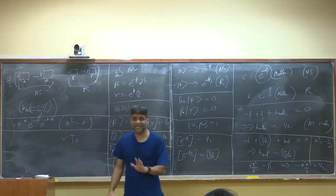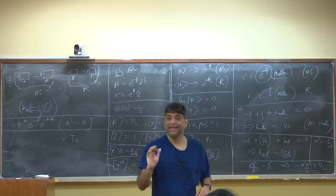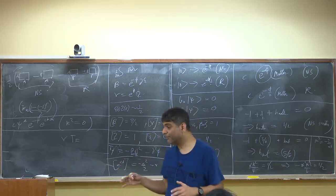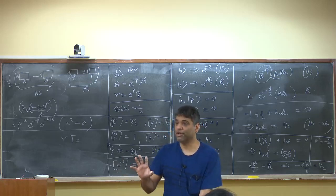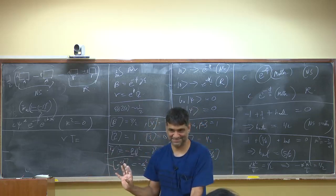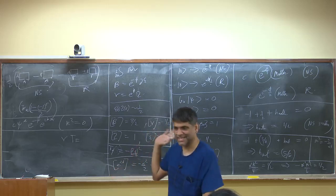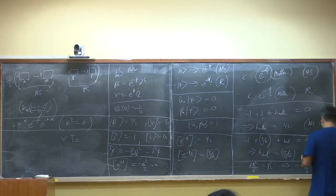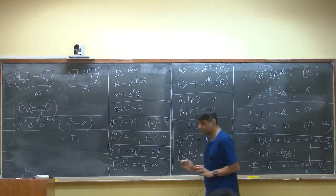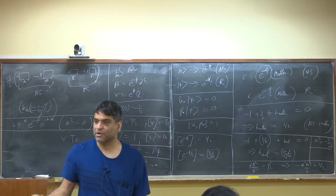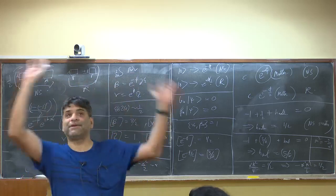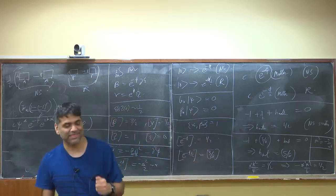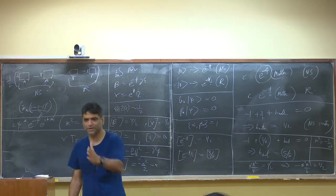The right way of thinking about this is that we're not projecting onto states of odd fermion number — we're actually projecting onto states of even fermion number, but fermion number gets a contribution not just from the matter fields but also from the ghosts. The GSO projection should be thought of as a projection onto the even fermion number sector when we include the contribution of the ghosts. Then everything is perfectly consistent, and the identity continues to have even fermion number.